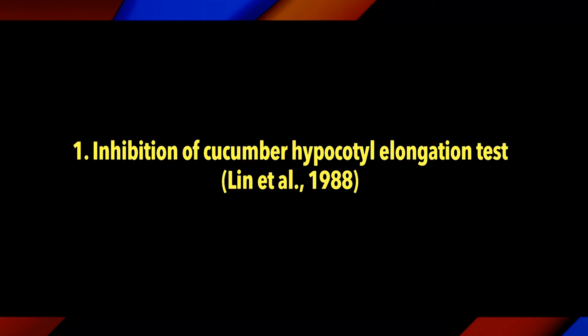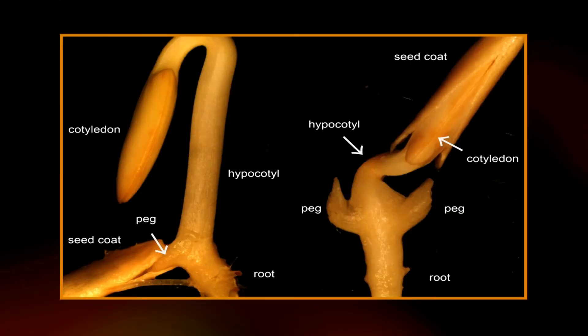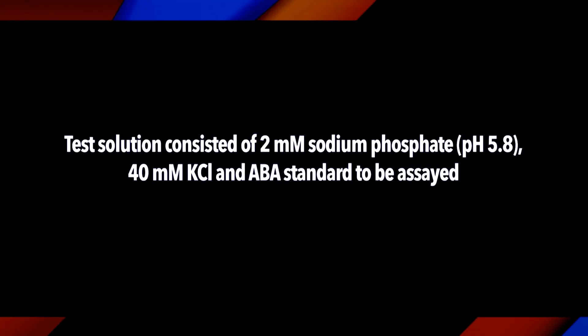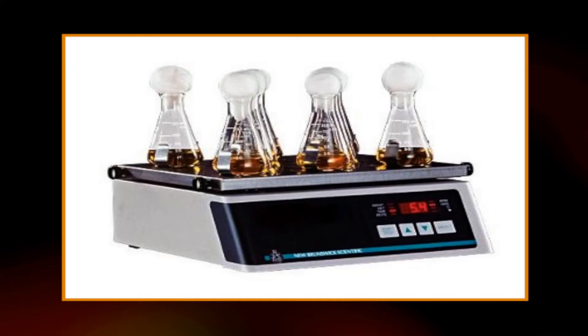Now we will discuss the inhibition of cucumber hypocotyl elongation test, performed by Lynn et al. in 1988. This is a simple bioassay for abscisic acid using cucumber hypocotyls. It is based on measuring the inhibition of elongation of cucumber hypocotyls. The hypocotyls from seedlings of different ages are excised in dim green safe light. Three consecutive sections of hypocotyl at 5 mm intervals — that is, 0 to 5, 5 to 10, and 10 to 15 mm below the cotyledons — are excised. A group of 7 hypocotyl sections with 3 replicates are placed in a 50 ml flask containing 1 ml of test solution. The test solution consists of 2 mM sodium phosphate at pH 5.8, 40 mM KCl, and the ABA standard. The bottles containing the test hypocotyls were placed in a shaker under darkness at 28°C and shaken at 10 rpm for conditioning.